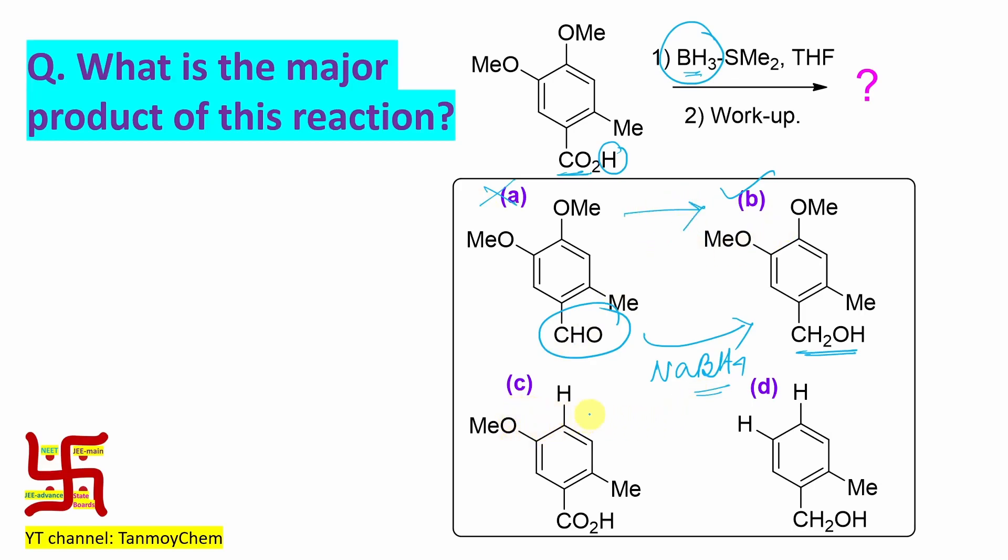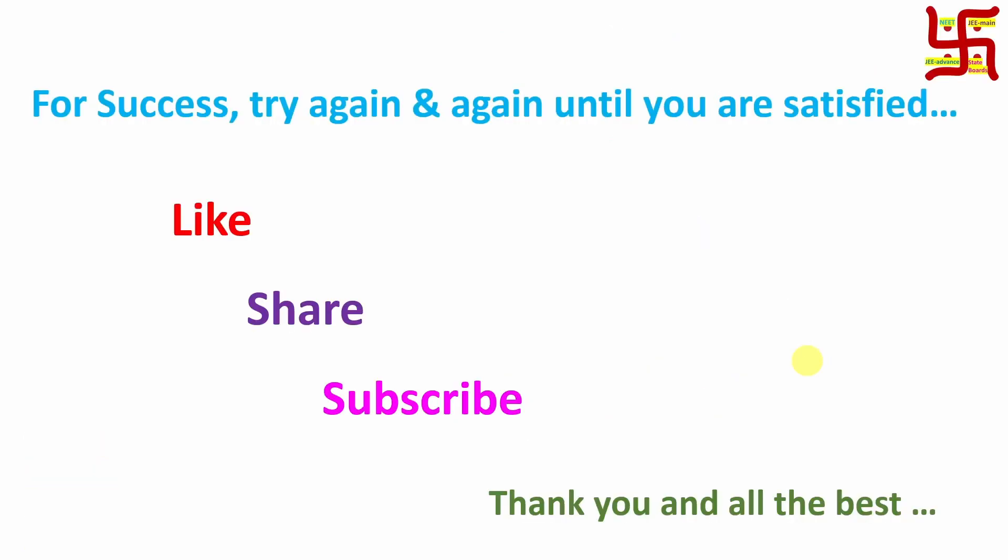Now, what about option C and D? In option C and D, see, this ether bond, this bond is broken, student, it is not expected. Not possible. Here, one broken. And here, both of these OMe, both ether groups are broken. So this is not stable. So this is the overall justification as well as explanation for this problem. I believe this video will be useful for you. Thanks for watching. See you in my next video. Bye-bye.